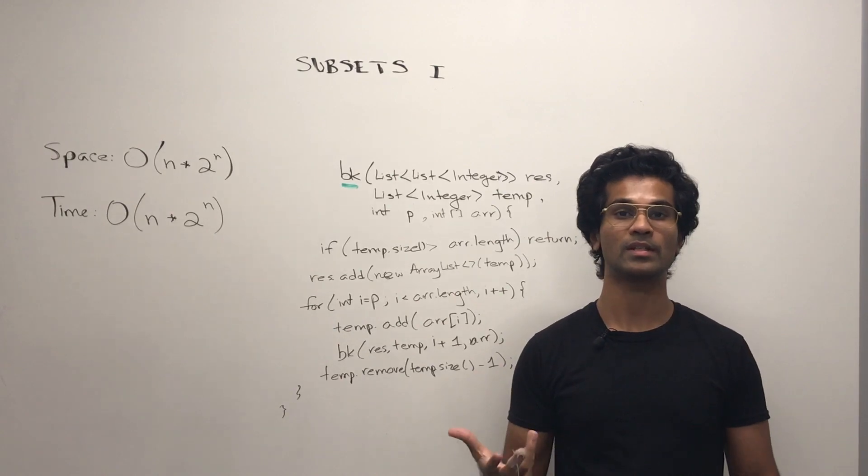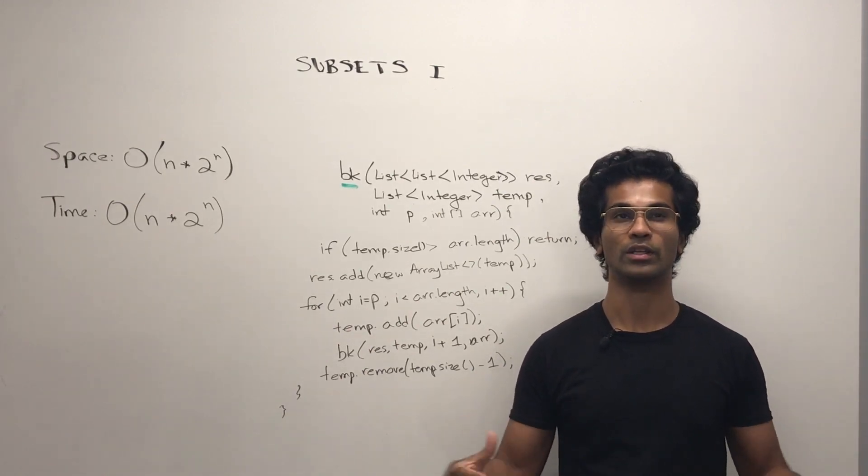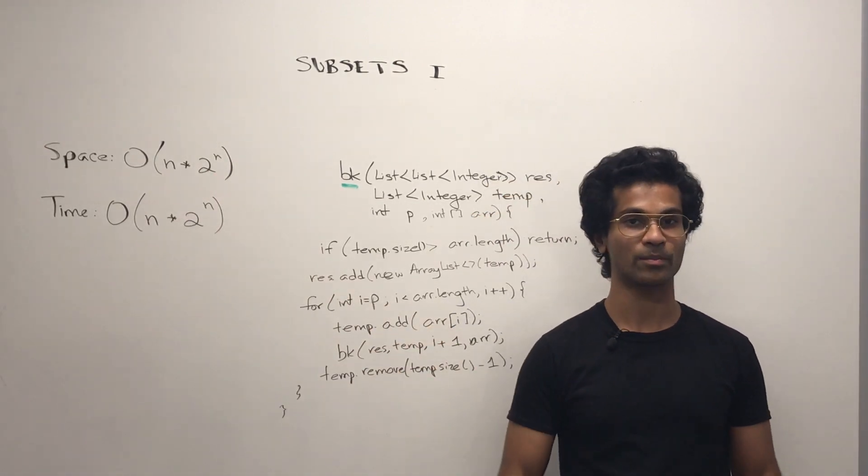That's why we're going to do n times 2 power n because let's say one of the subsets could be the entire original array. So that's why the worst or the largest pretty much is going to be n times 2 power n for space complexity.